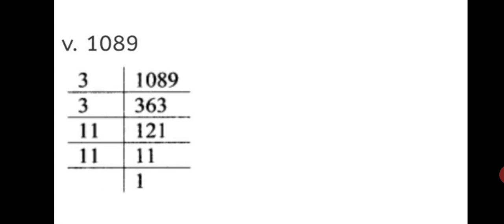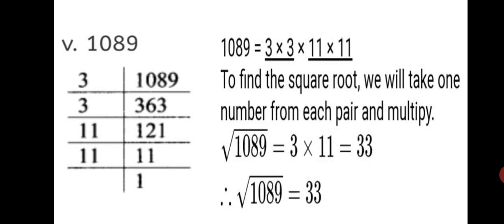Fifth sum: find the square root of 1089. We add up the digits and see that it is divisible by 3, so we start with 3 and find all prime factors. 1089 equals 3 into 3 into 11 into 11. Pairing them: 3 into 3 is one pair, 11 into 11 is the second pair. Taking one number from each pair and multiplying: square root of 1089 equals 3 into 11, which equals 33. Therefore, the square root of 1089 equals 33.